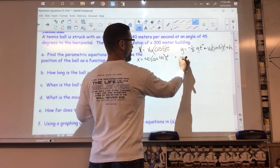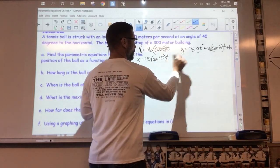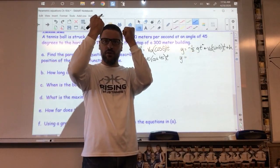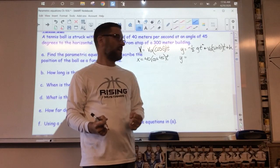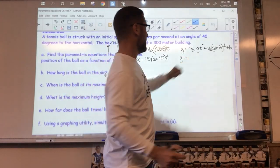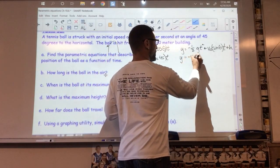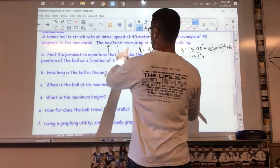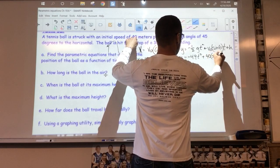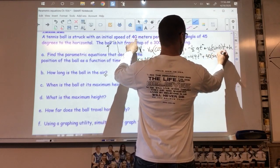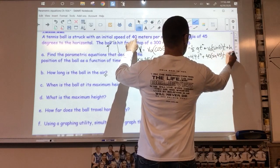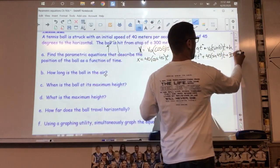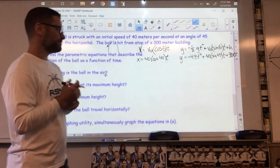The other one is y equals the gravitational constant in meters per second. Negative one half times 9.8 is negative 4.9t² plus initial velocity 40 meters per second times the sine of the angle, which is still 45, times t plus the start height. This time the start height is 300.